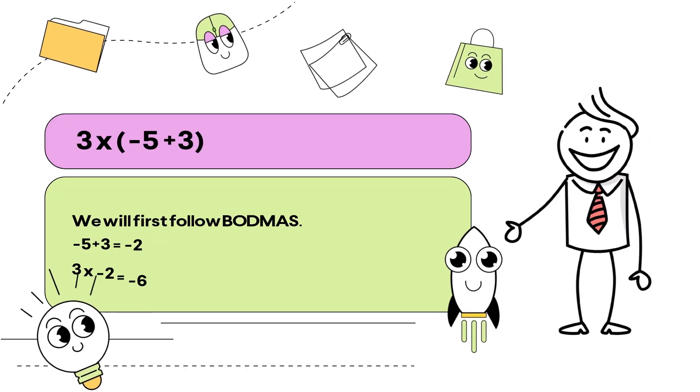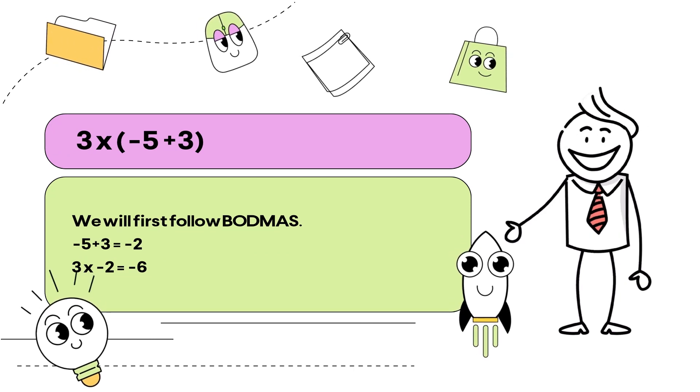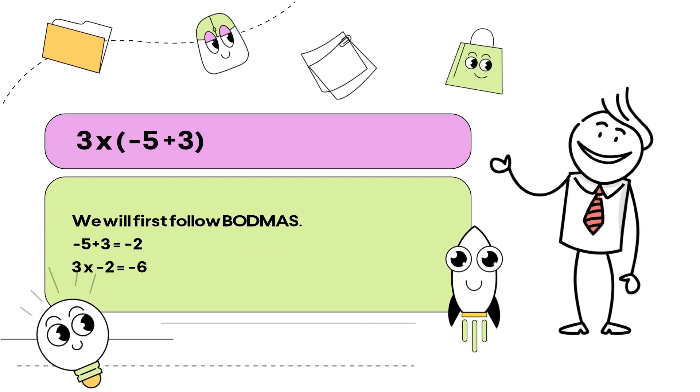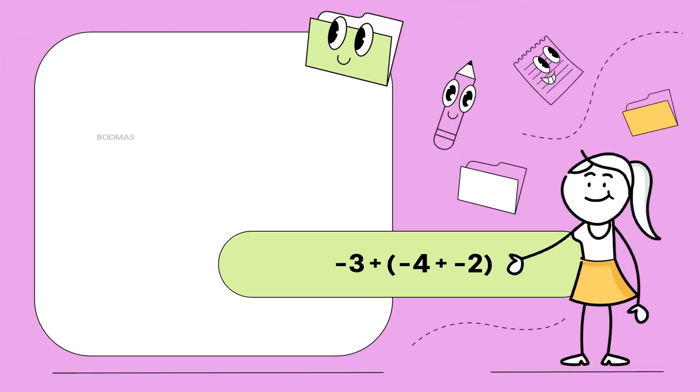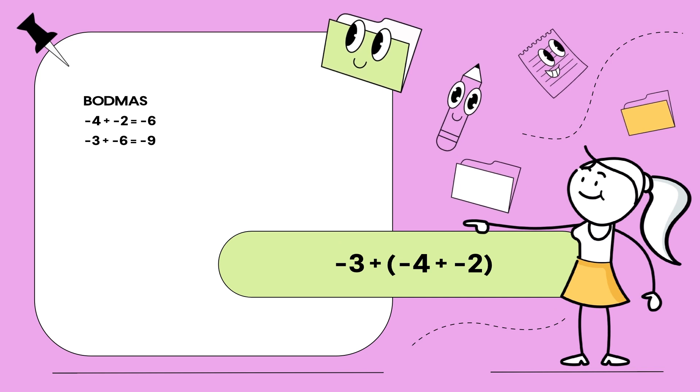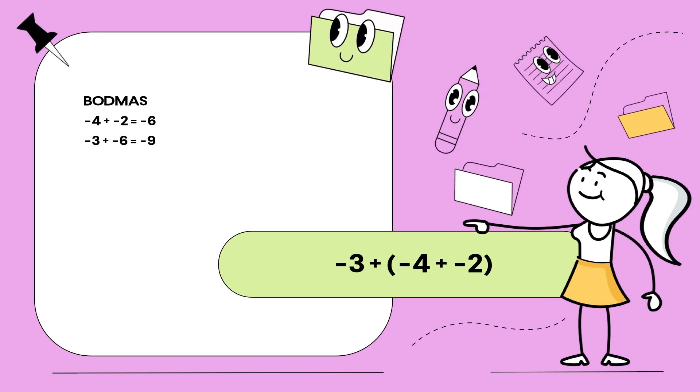Follow BODMAS. Negative 5 add 3 is negative 2. Negative 2 times 3 is negative 6. Follow BODMAS again. Negative 4 add negative 2 is negative 6. Negative 6 add negative 3 is negative 9.